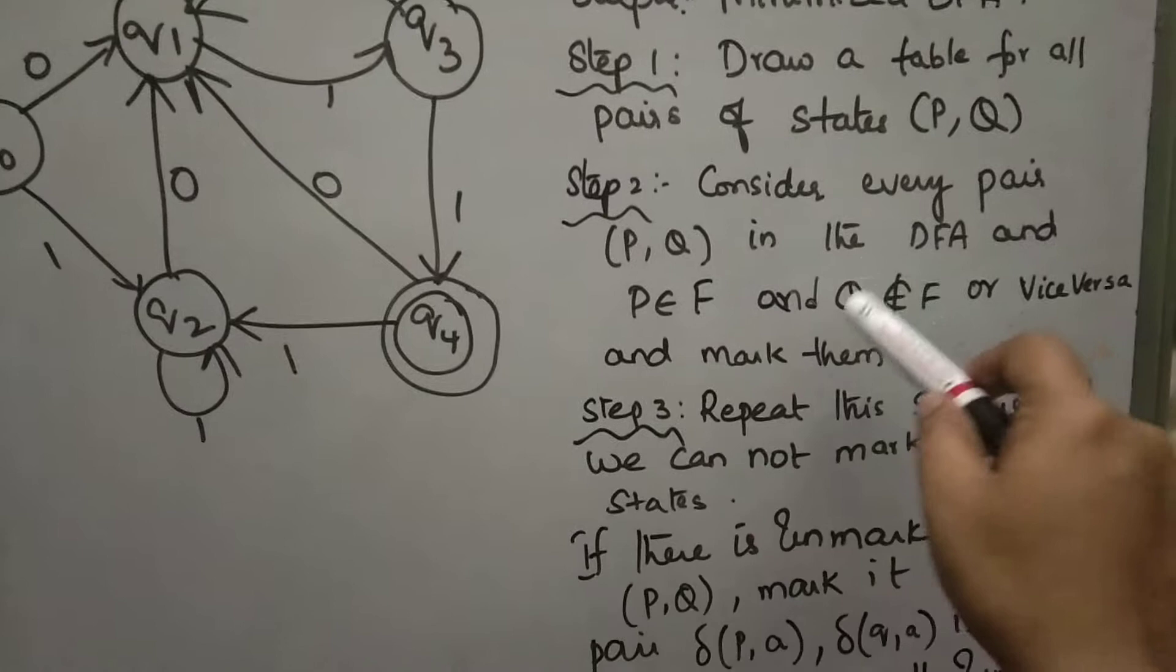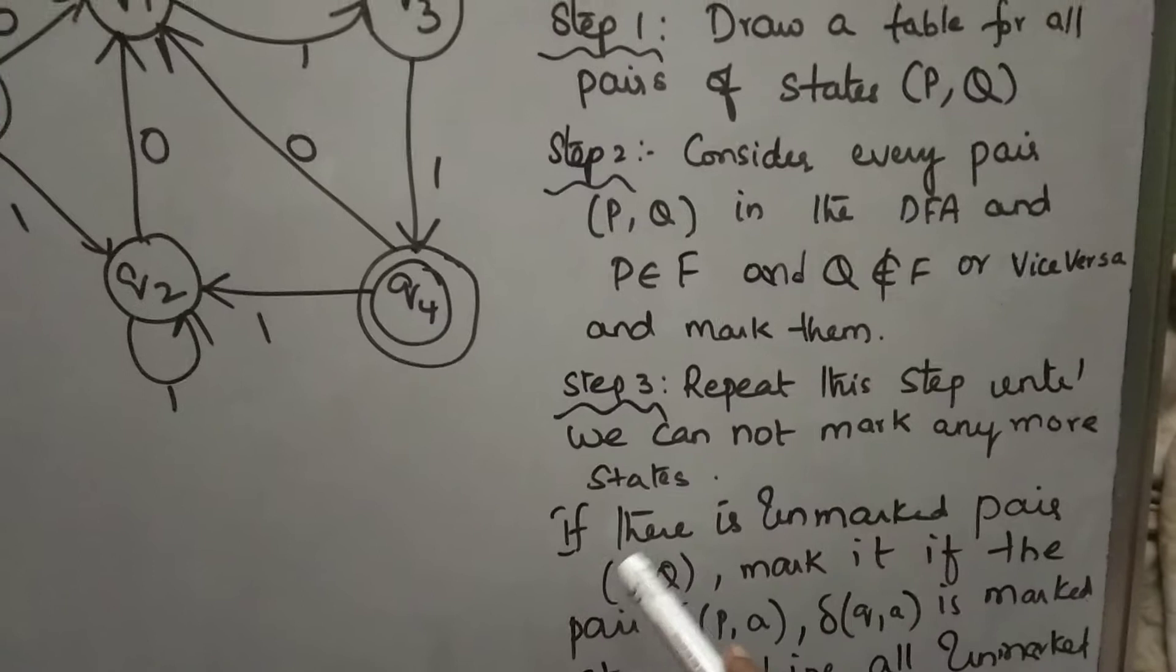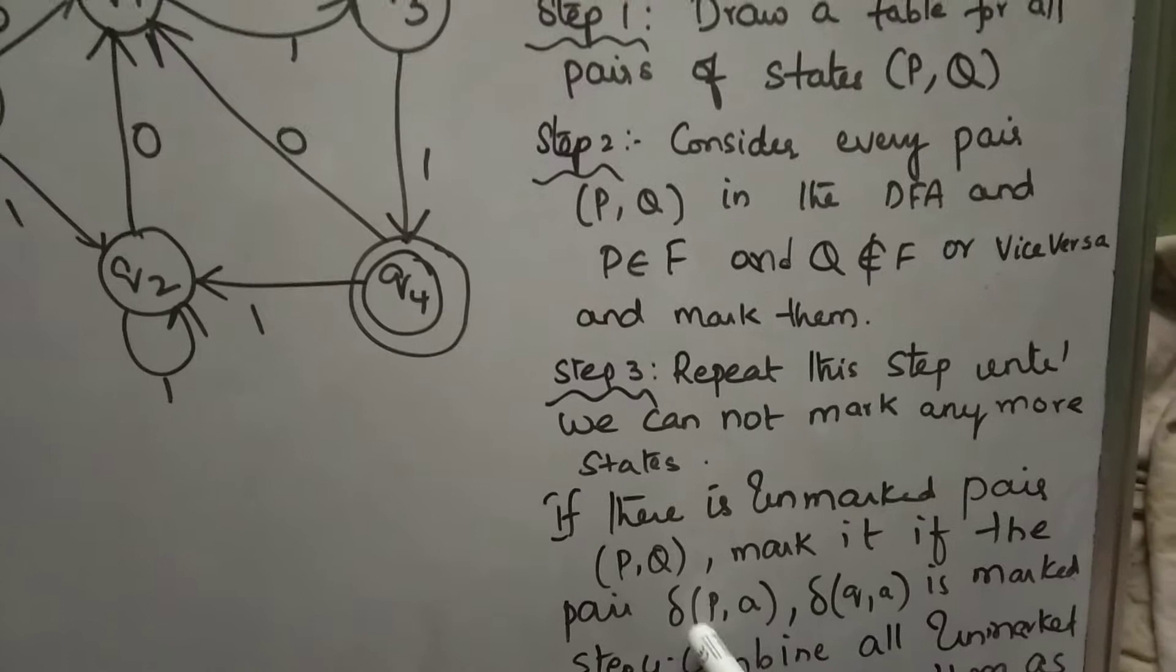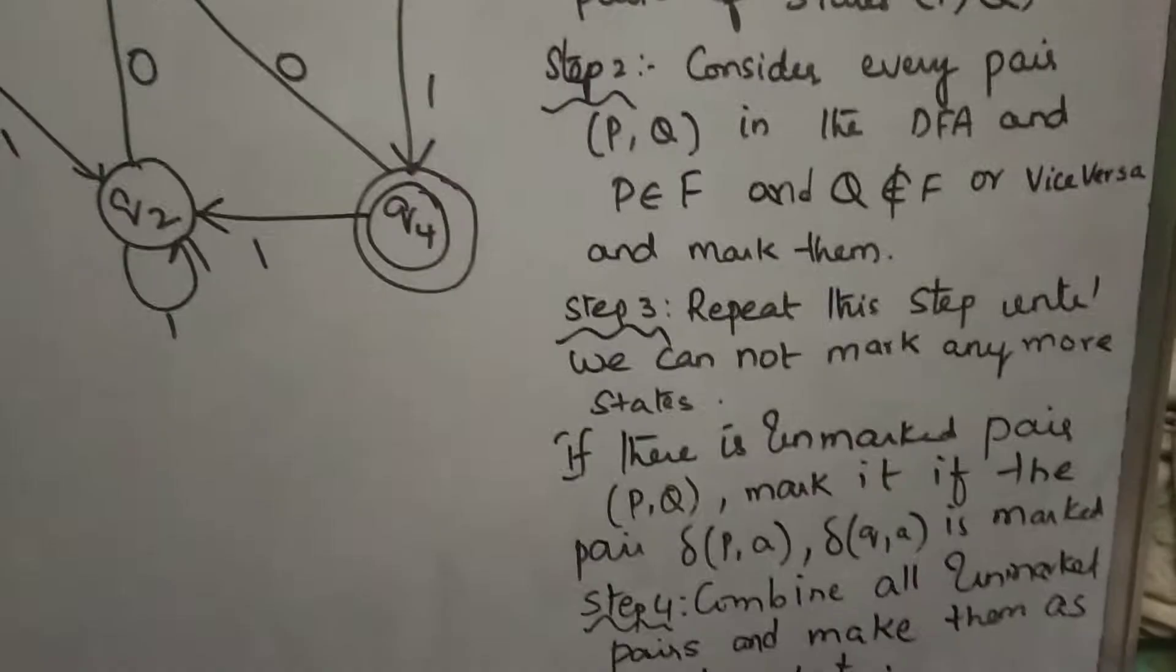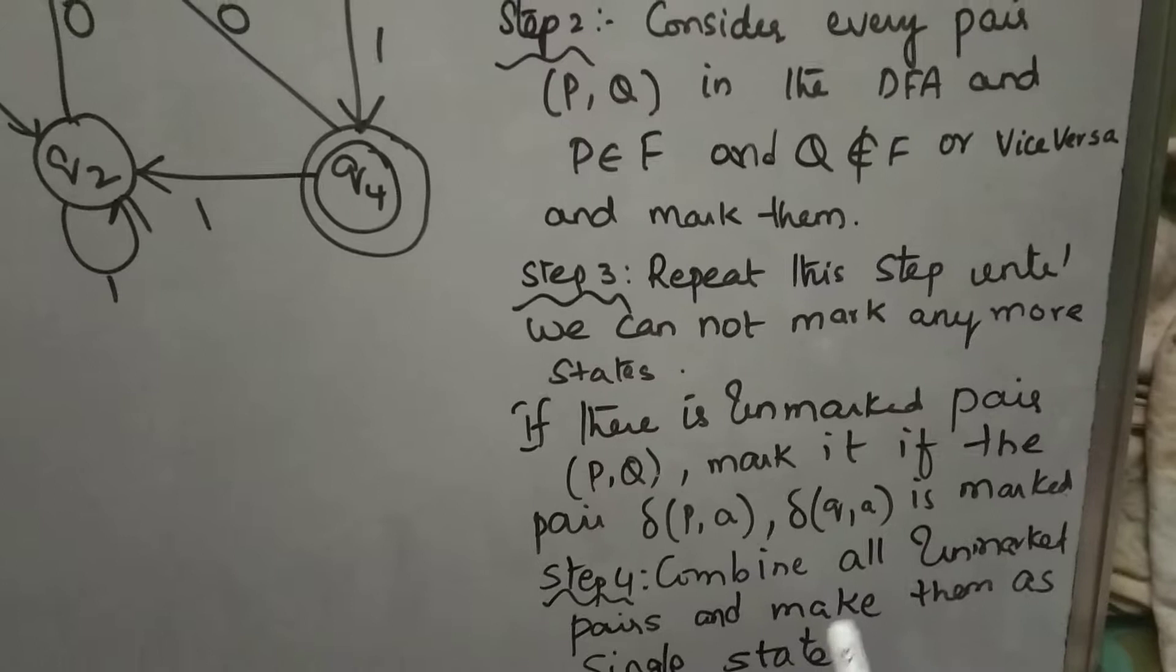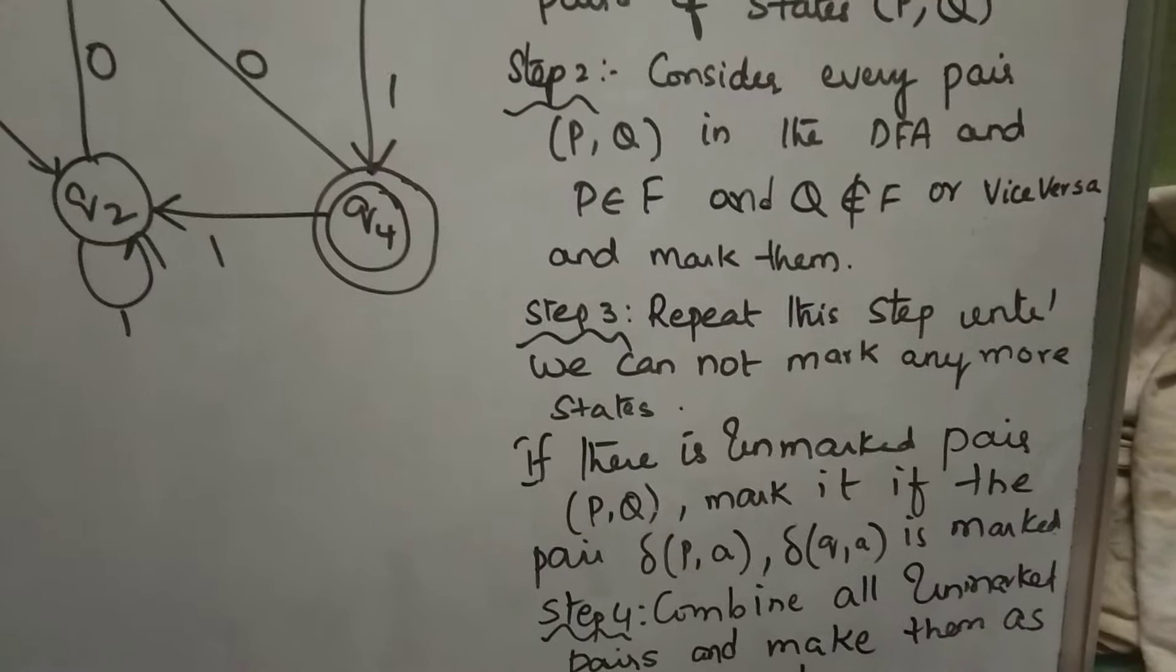Step 3: Repeat this step continuously. For unmarked pairs, if there is unmarked pair P, Q, check delta of P upon A and Q upon A. If that pair is already marked, then mark P, Q also. Step 4: Combine all unmarked pairs and make them as single state. Marked pairs will remain as separate states and final state will remain separate.